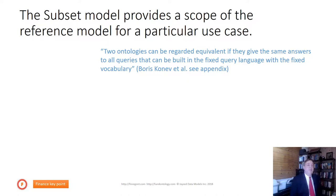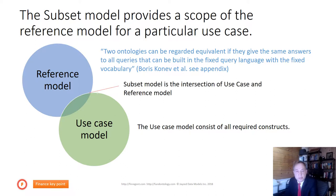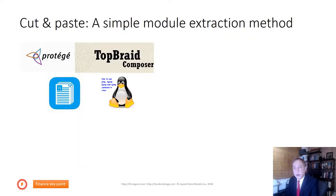The ideal solution is the subset model, because it provides the scope of the reference model for a particular use case. Let me start with a definition from Boris Konev: two ontologies can be regarded as equivalent if they give the same answers to all queries. Our use case model consists of all required constructs — newly defined triples and those we use from the reference model. The subset model is the intersection of the use case and reference model, and the equivalence proof is that all queries run on the subset produce the exact same result as running them on the full reference model.